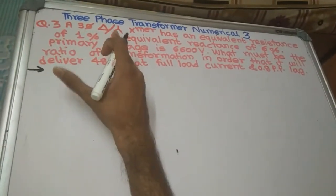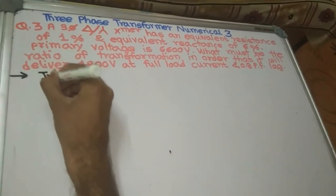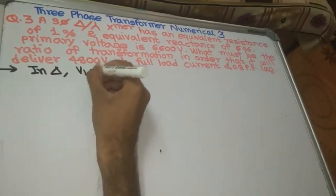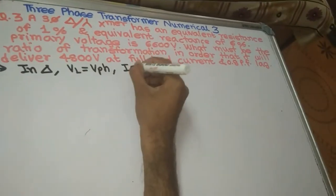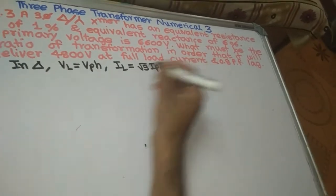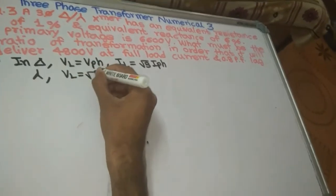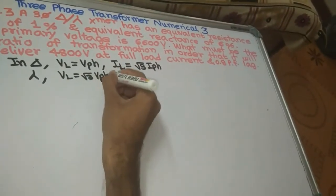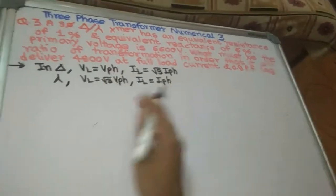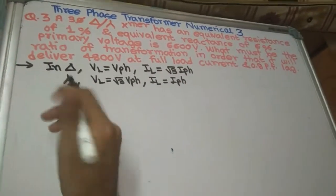This is a delta-star transformer — primary is in delta, secondary is in star. In delta, both voltages are the same (VL = Vph) and current is different (IL = √3 · Iph). On the star secondary side, voltages are different (VL = √3 · Vph) and line current and phase current are both equal. This is the star-delta relation.